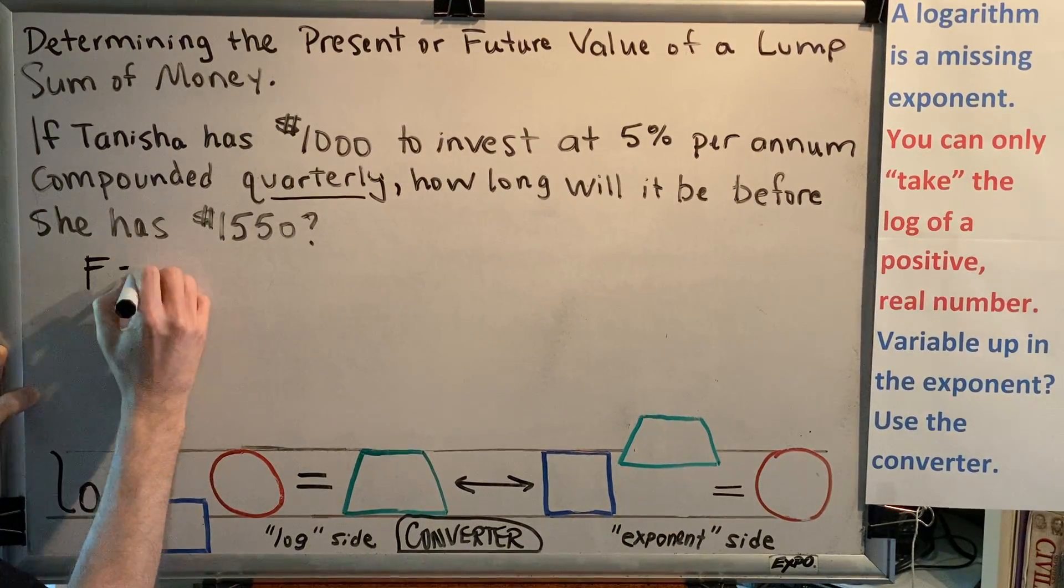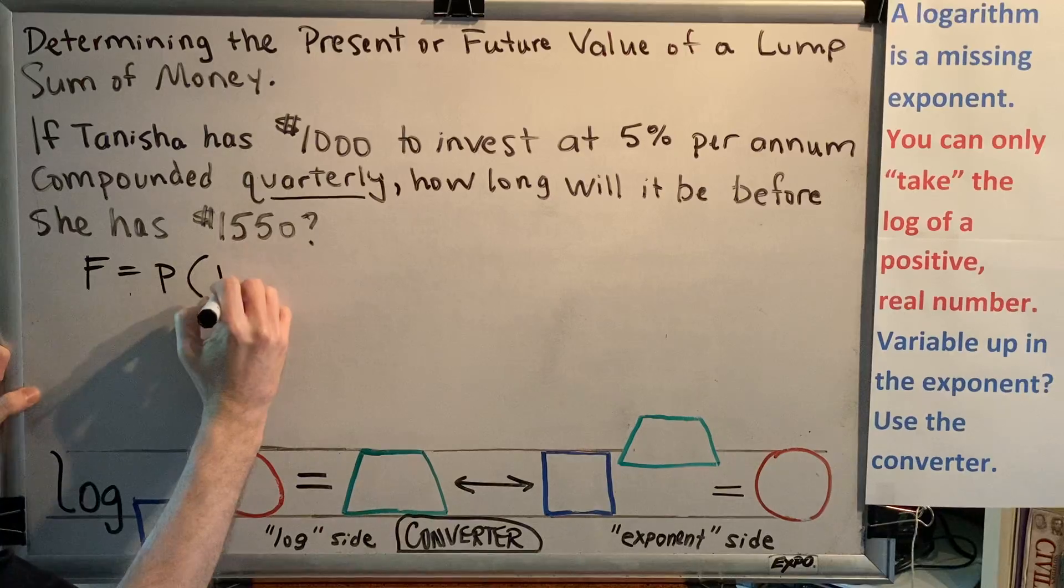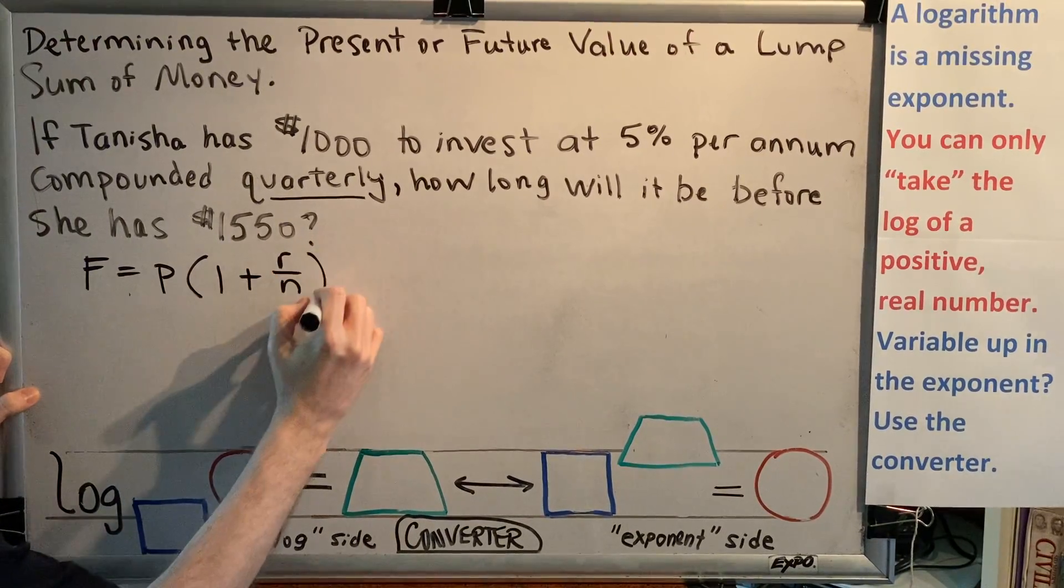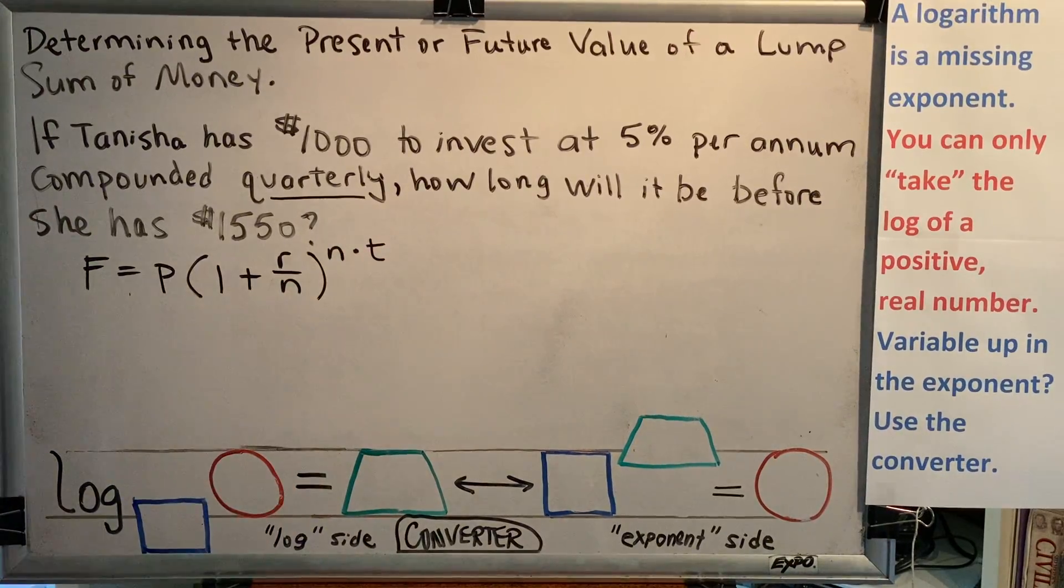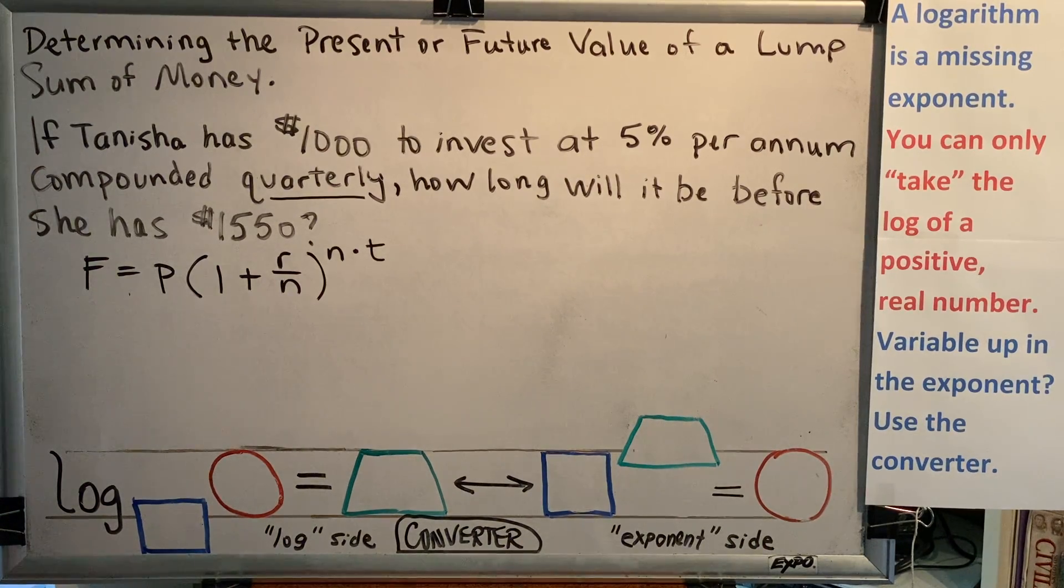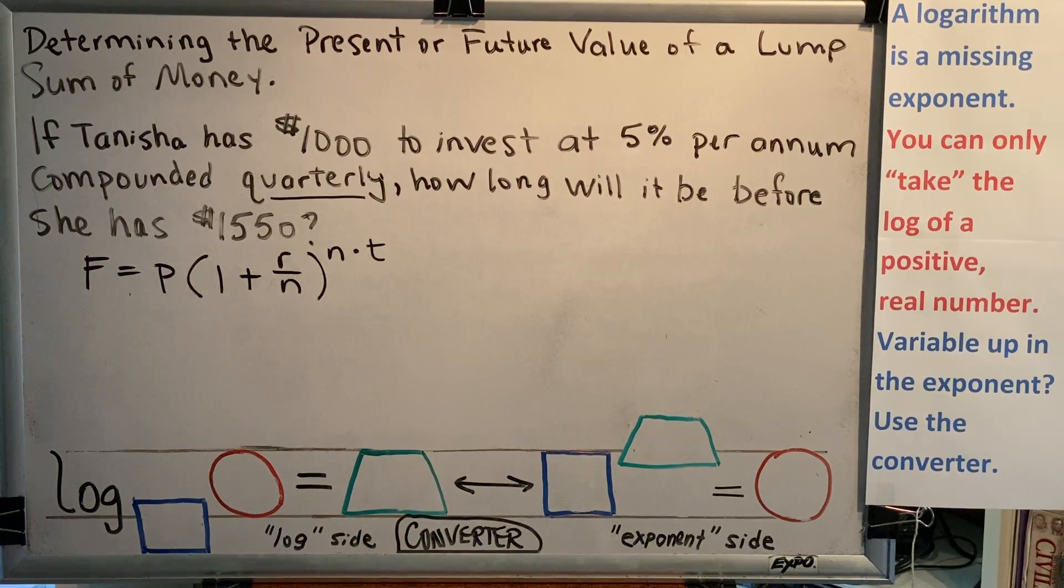F equals P times (1 plus R over N) to the N times T power. We have to identify the value of all of these variables, F-P-R-N-T. So let's read the problem and see if we can figure out the meaning of each one.